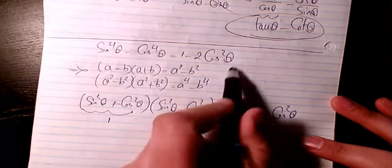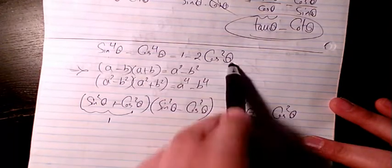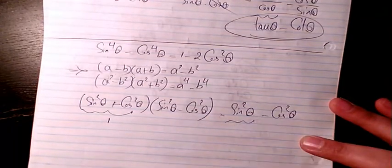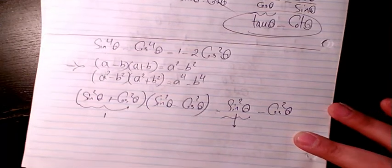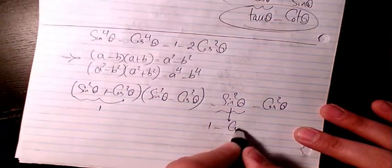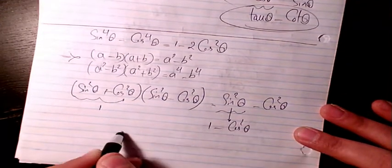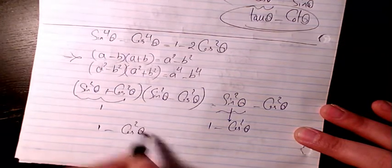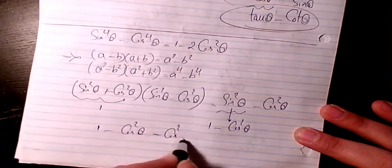But it's not done yet, we don't have any sine on this side, so I just want to convert sine to cosine. You know sine squared theta is the same as 1 minus cosine squared theta. So the answer will be 1 minus cosine squared theta minus cosine squared theta.